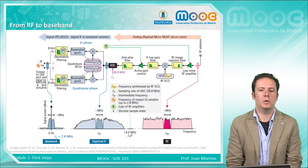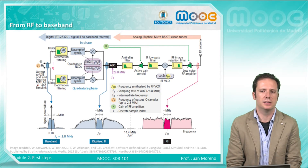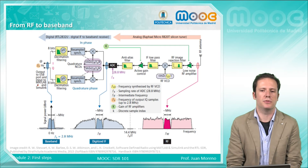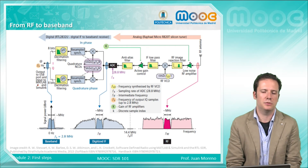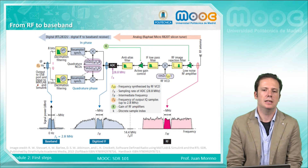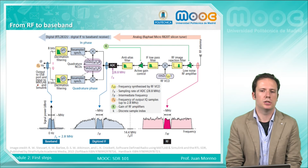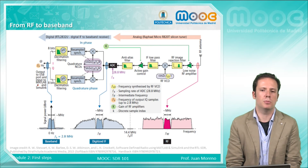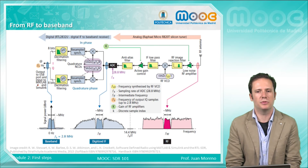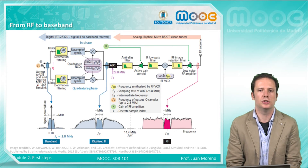This is what happens to the signal from radio frequency to baseband — it undergoes two changes in frequency: from radio frequency to intermediate frequency, and from intermediate frequency to baseband. In each stage a lot of things happen to the signal, some of them handled by the RTL and some by the analog tuner.